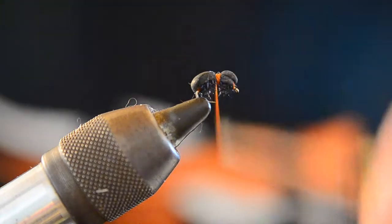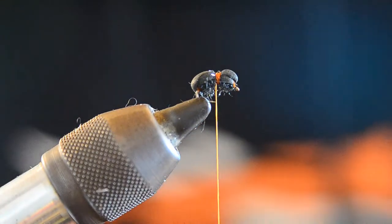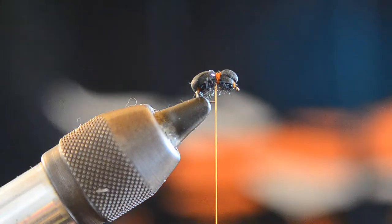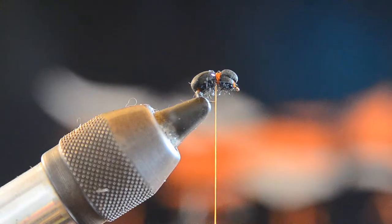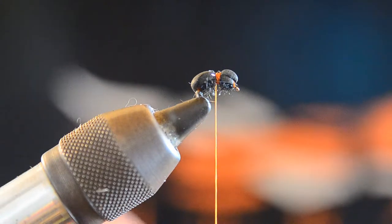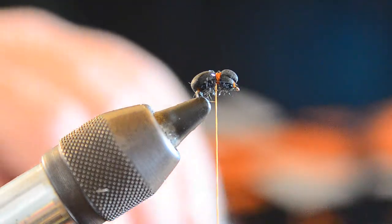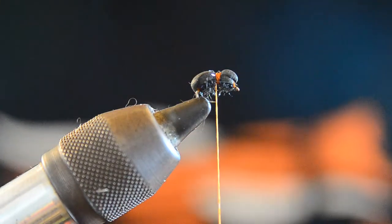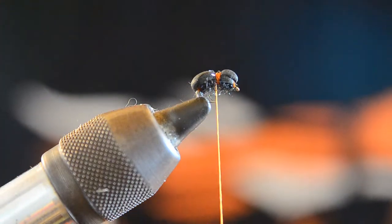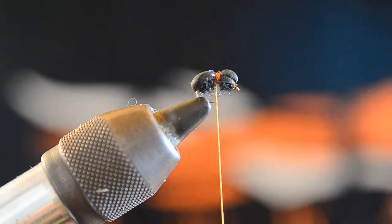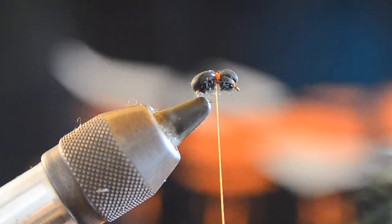There you see we have a nice little ant body. This one's tied on a size 16 scud hook, gives it sort of a little bit of, I don't know, maybe a little bit more lifelike shape than the straight hook. You certainly can tie one on a straight hook if you wish.